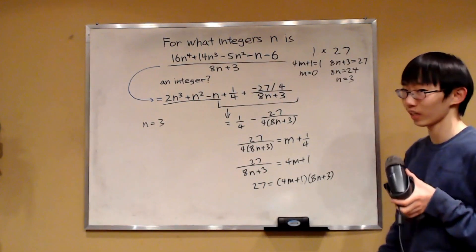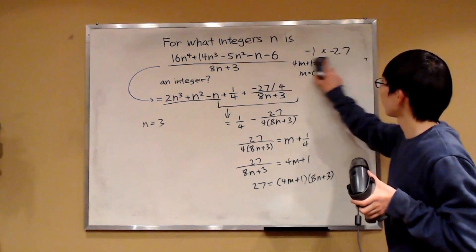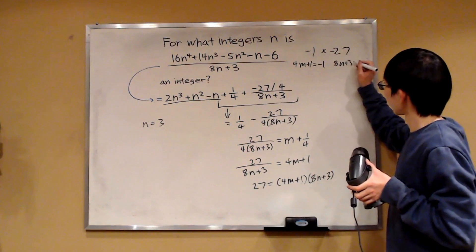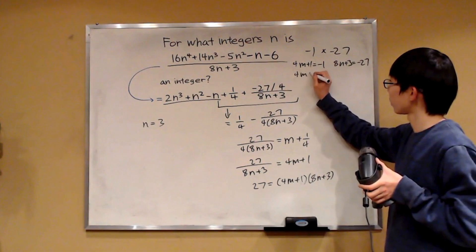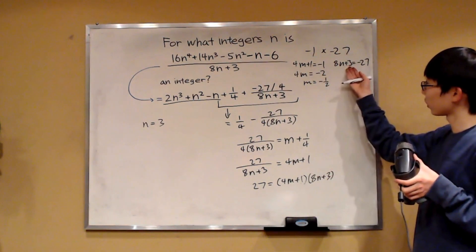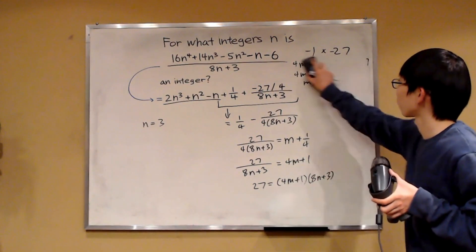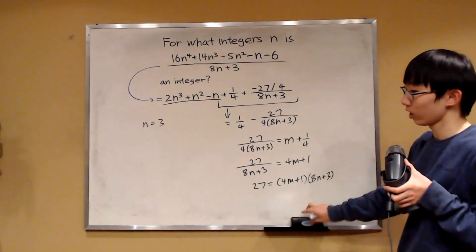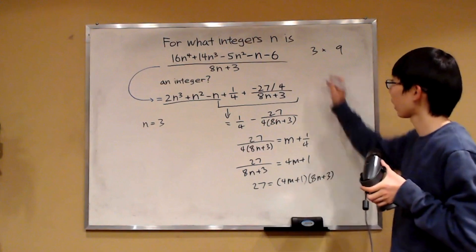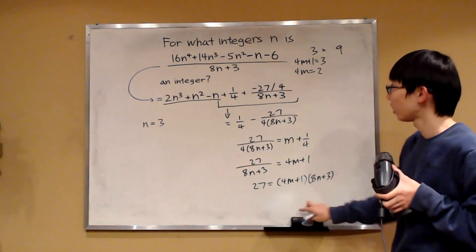Are there more solutions? We also have to consider negative factors. If 4m plus 1 equals negative 1 and 8n plus 3 equals negative 27, then 4m equals negative 2, so m equals negative 1 over 2 — not an integer. So this doesn't work. Next, consider 3 times 9: setting 4m plus 1 equal to 3 gives 4m equals 2, so m is not an integer. That case fails too.